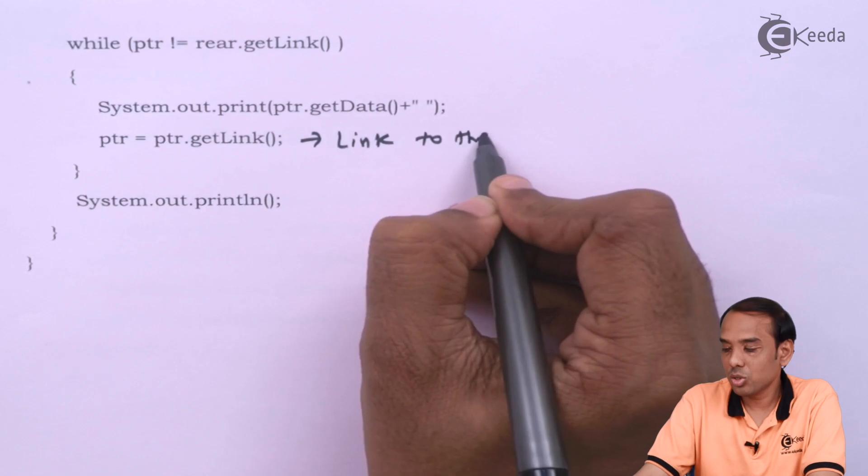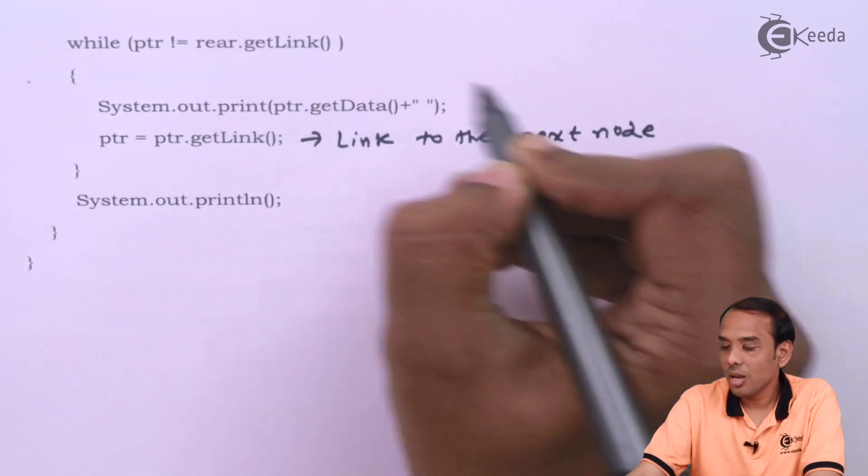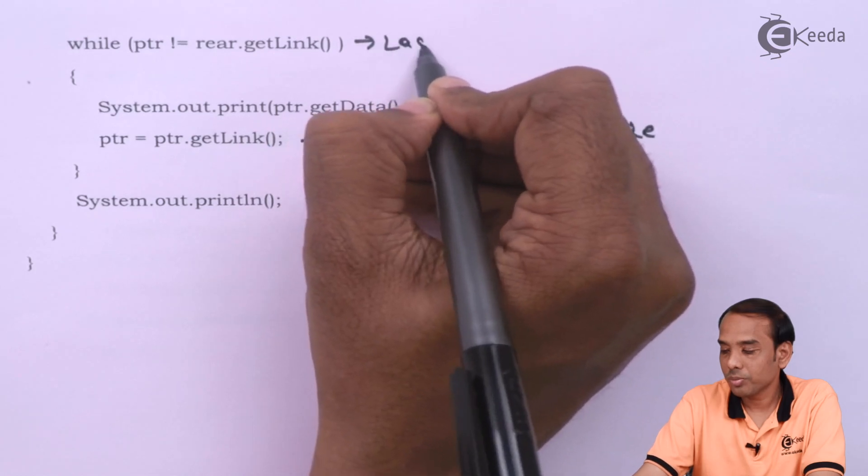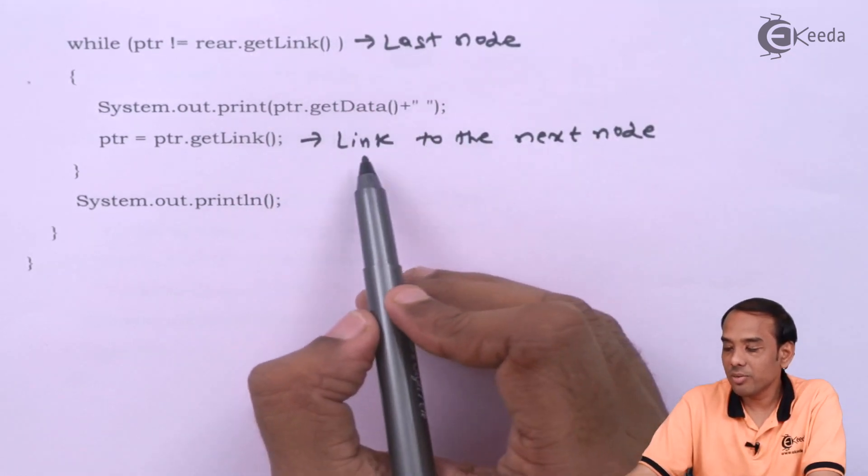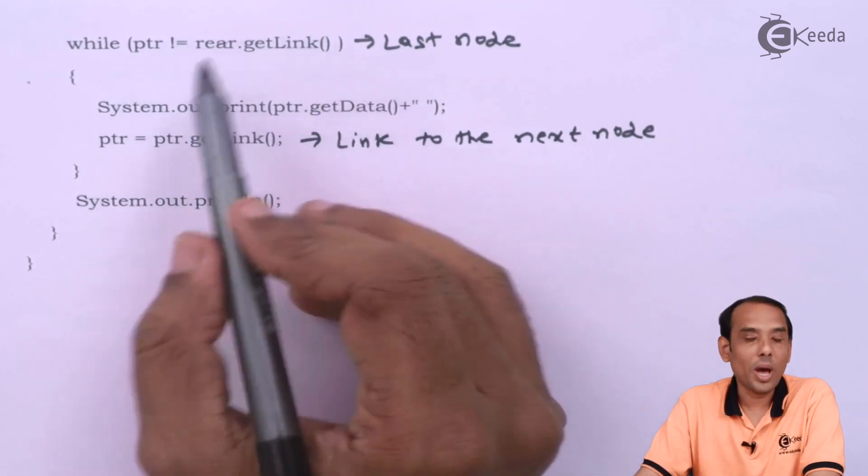Link to the next node until I reach the last node. So we have last node condition here and this will give me the link to the next node. Like this, I can iterate through the values.